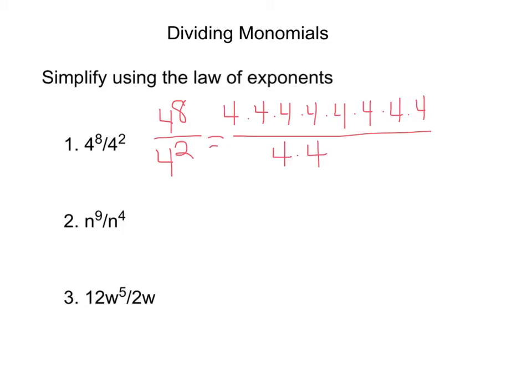Now dividing is a little different than multiplying because we're going to have to cancel these out. Because 4 divided by 4 is 1, these two would cancel out, these two would cancel out. So all we're left with is six fours, so the answer would be 4 to the sixth power.